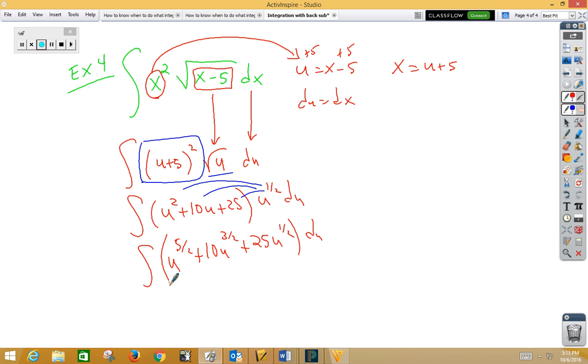Again, now we can use reverse power rules, so we get u to the 7 halves times 2 sevenths plus 10u to the 5 halves times 2 fifths plus u to the 3 halves times 2 thirds with the 25 plus c.